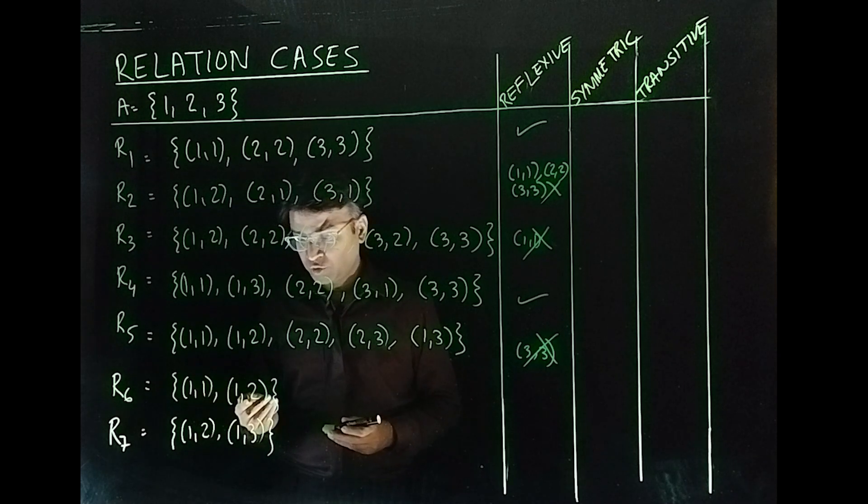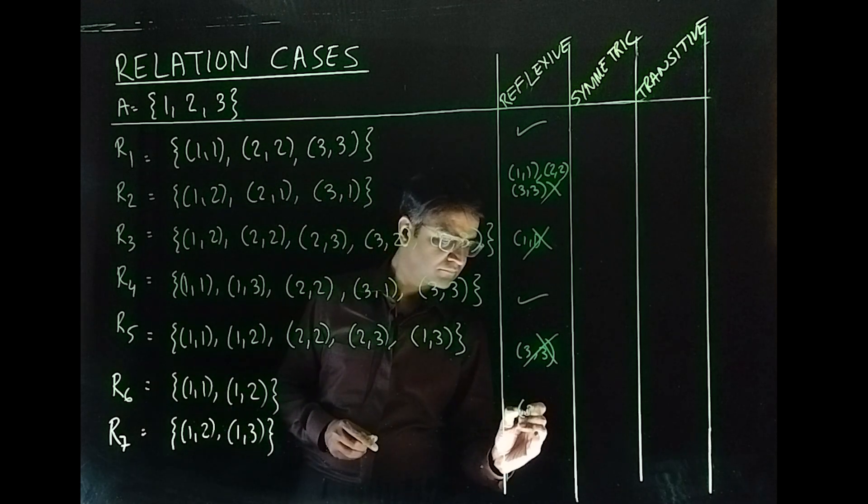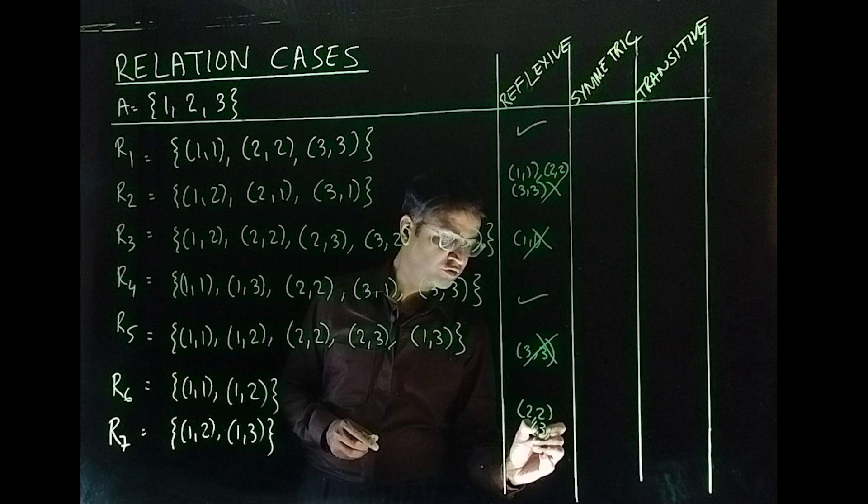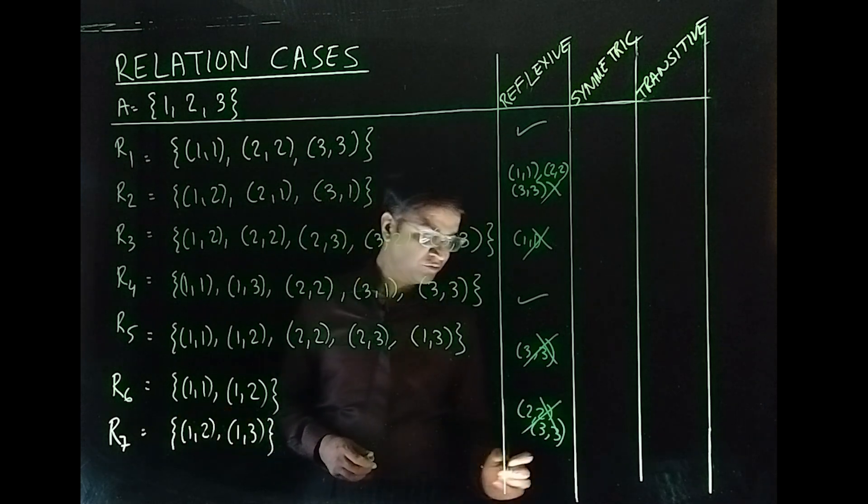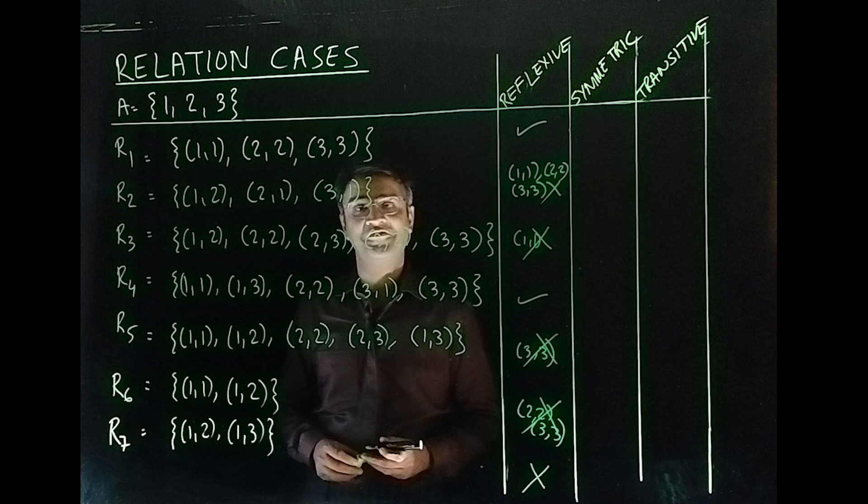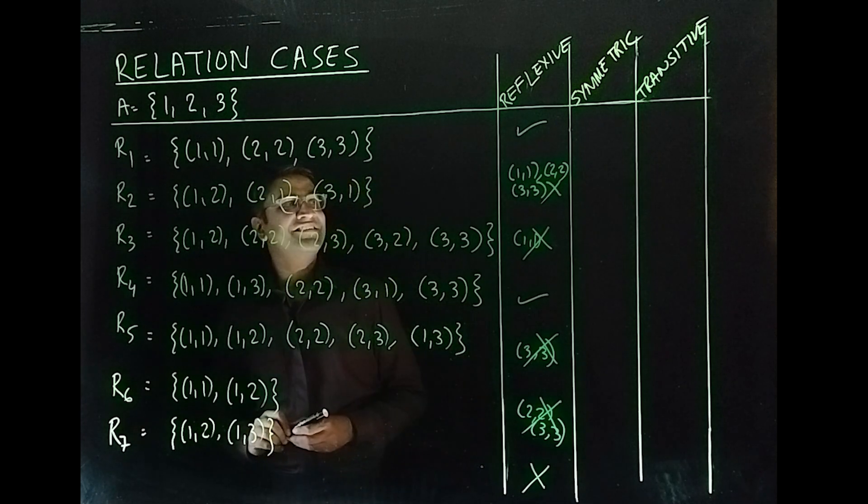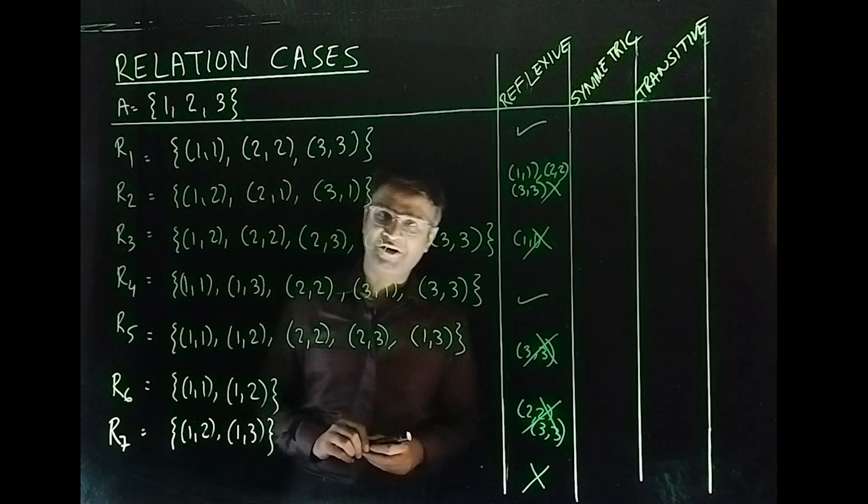(1,1), fine. What about (2,2) and (3,3)? (2,2), (3,3). Both of them are missing, so no. Well, you would have figured out R₇ is not reflexive either. Let's start with symmetric now.